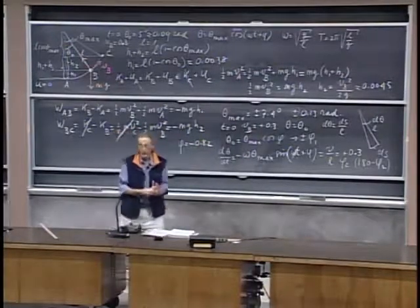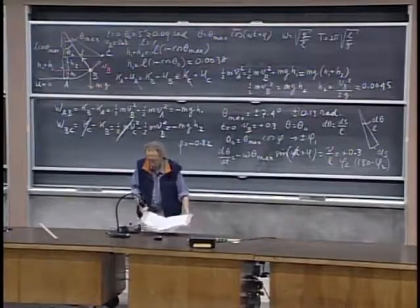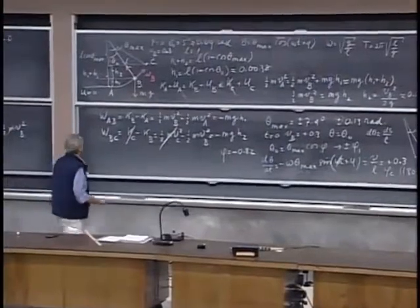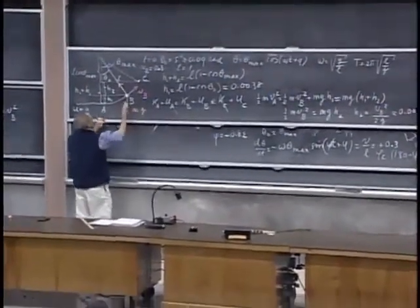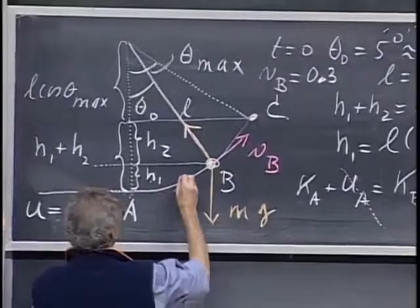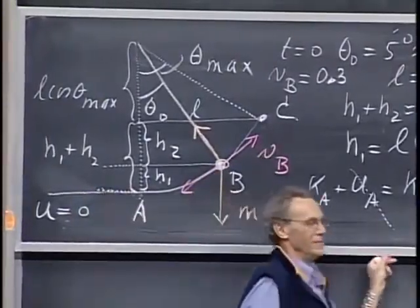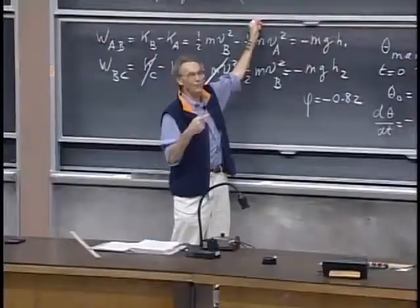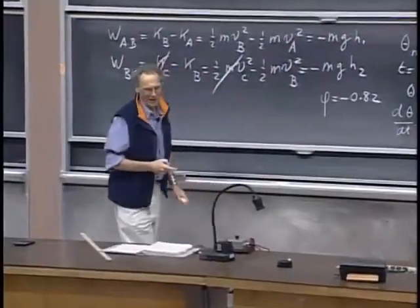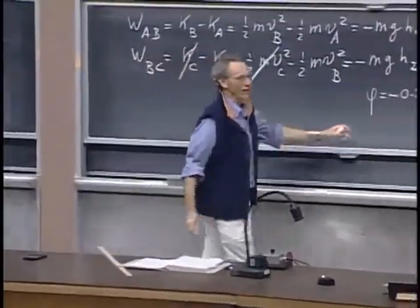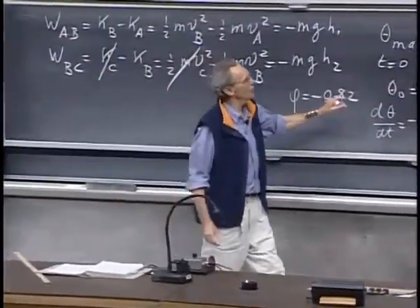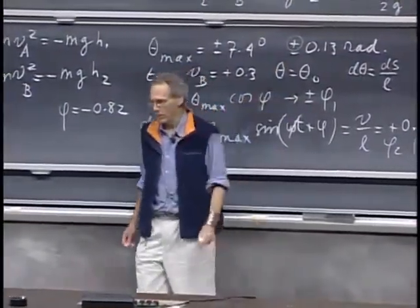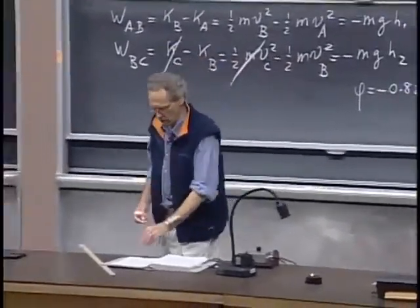There's not much physics in the phase angle. Interesting to note: if we had given the speed in the opposite direction, theta-max would not change, but phi would become +0.82. Those who chose theta-max = −0.13 would find a different phase angle altogether.